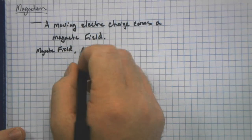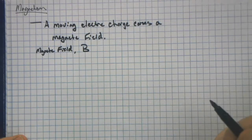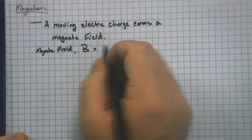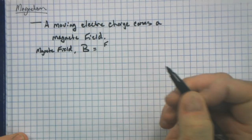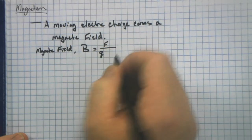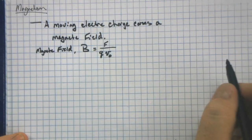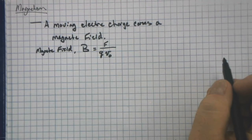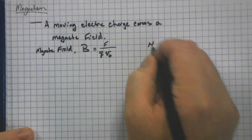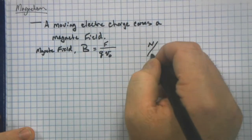Magnetic field is given to us by the letter B. And it is equal to the force that is exerted upon a charge moving at a certain velocity. The units for this are newtons per amp meter.